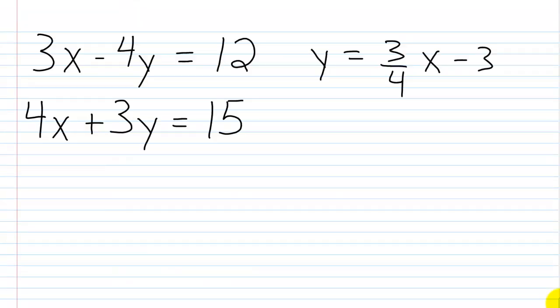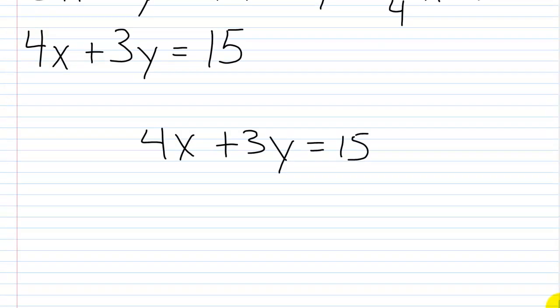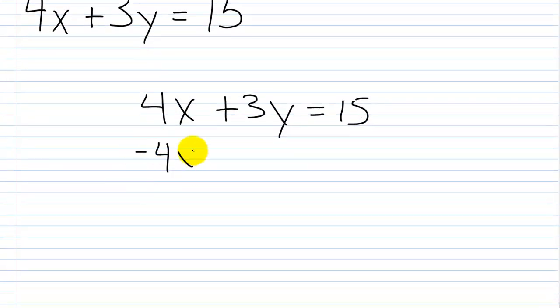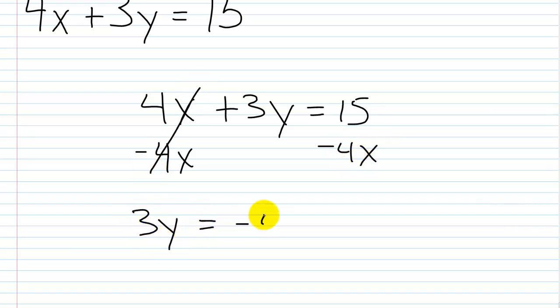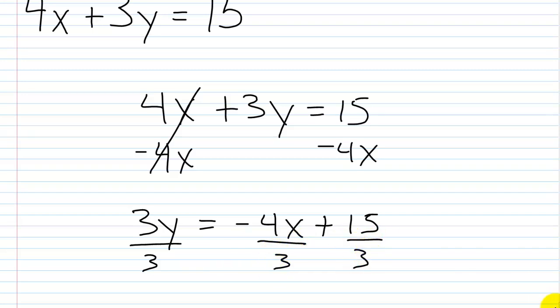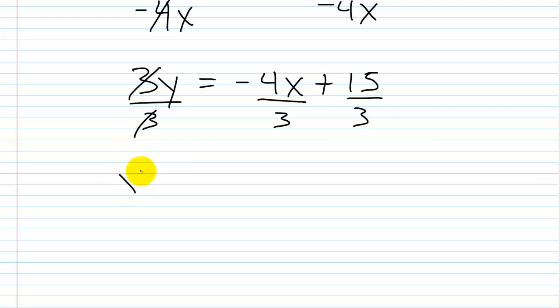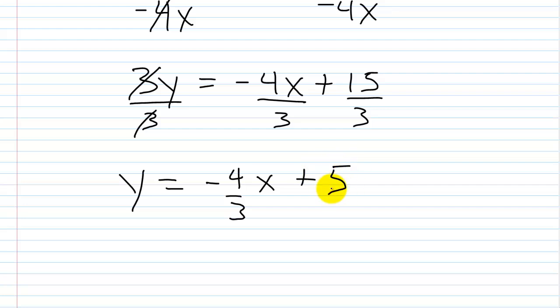Next we have 4x plus 3y equals 15. Subtract 4x from both sides: 3y equals negative 4x plus 15. Now divide each part by 3. We have y equals negative 4/3 x plus 15/3, and 15 divided by 3 is 5. So y equals negative 4/3 x plus 5.